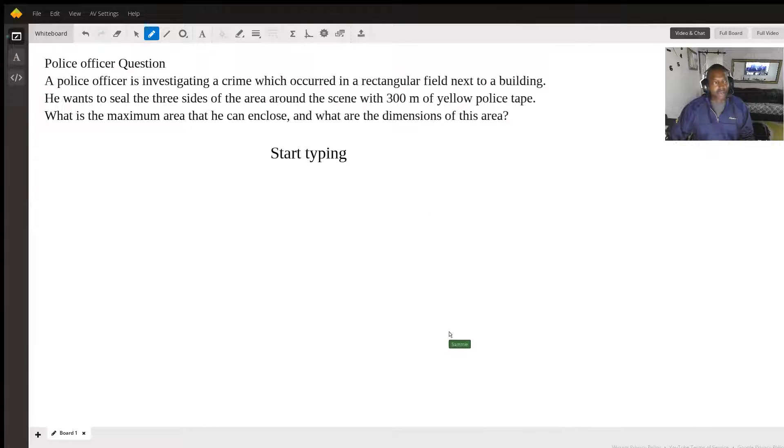Hello and today we're going to answer the police officer question where a police officer is investigating a crime which occurred in a rectangular field next to a building. He wants to seal the three sides of the area around the scene with 300 meters of yellow police tape. What is the maximum area that he can enclose and what are the dimensions of this area?